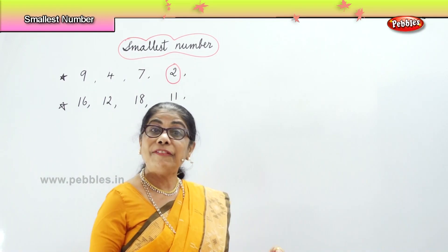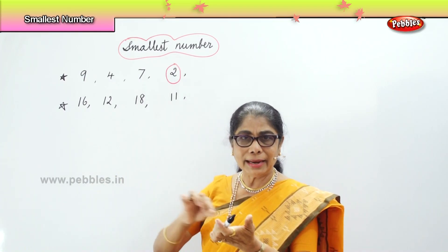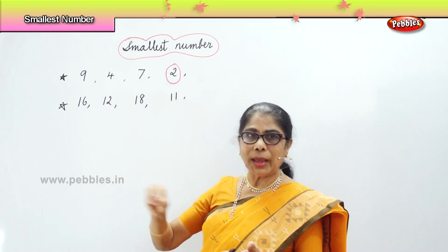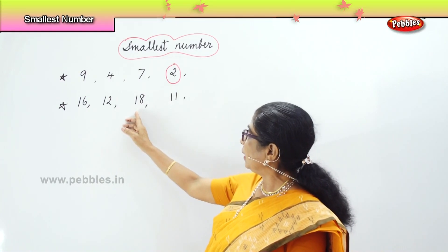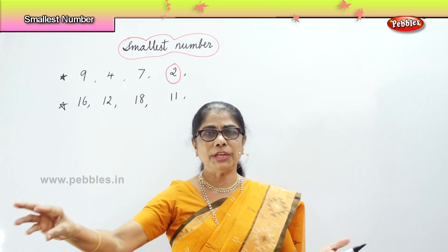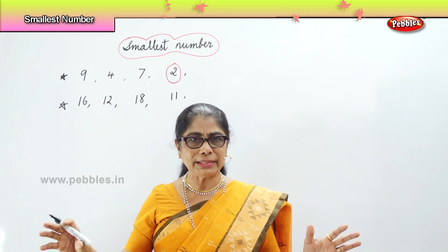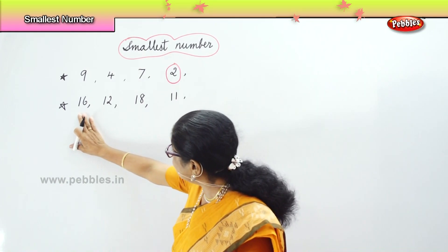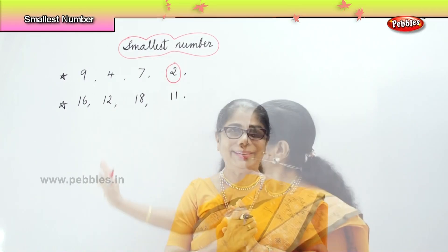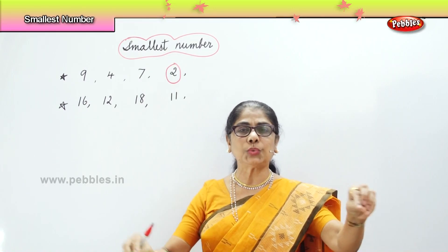Now, if I give you 16 beads to count, 12 beads to count, 18 beads, and 11 beads — you are counting. Now, who's got the least? That's what we are going to look at: 16, 12, 18, 11. So, we are going to count the beads here, each one.